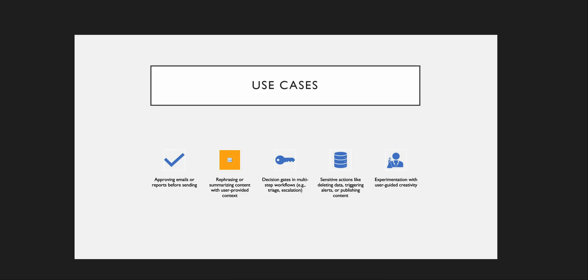The fourth use case is sensitive actions, like when you want to delete data — you want to be double sure before executing such expensive operations. When triggering an alert, it could cause panic if that alert is false, so it's always good to review before proceeding. The fifth is experimentation with user-guided creativity — if you want to adjust the tone of something you've written, it's recommended to review the output generated by the agent before proceeding. These use cases give you a good idea of whether to implement this in your project.